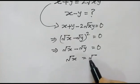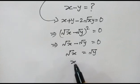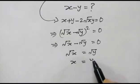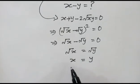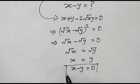Square root of x will be equal to square root of y. On squaring both sides we get x is equal to y, or x minus y is equal to 0. This is our required result. Thank you.